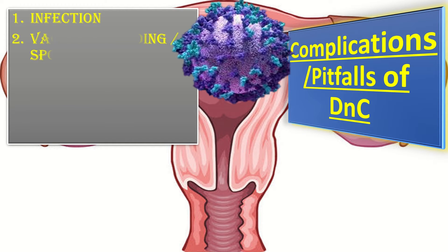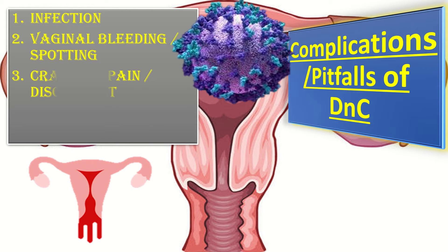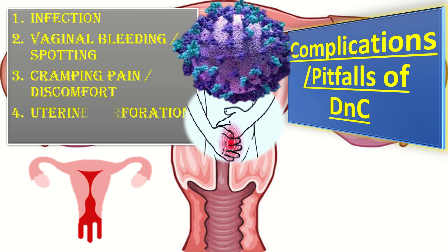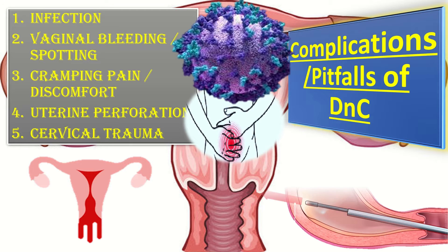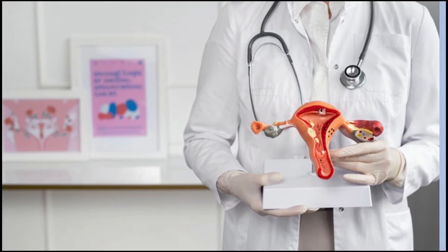The complications or pitfalls of D&C include infection, vaginal bleeding or spotting, cramping pain or discomfort, uterine perforation or transposal, cervical trauma, or creation of a false opening in the cervix.